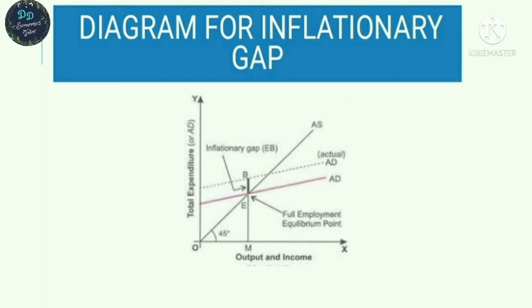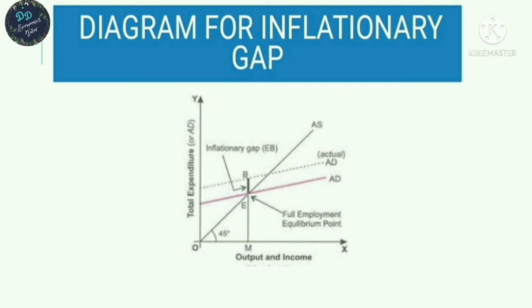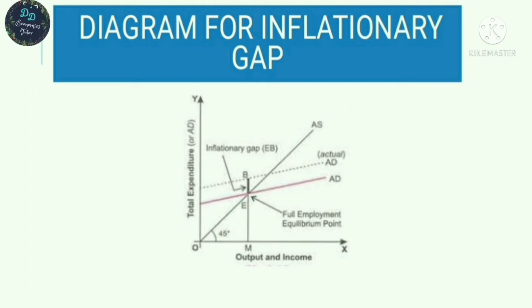OM is the full employment level of resources on the X-axis. When excess demand occurs, aggregate demand raises to AD1. The AD1 curve is above the original aggregate demand curve, and the gap between them represents the excess demand, which is the inflationary gap.